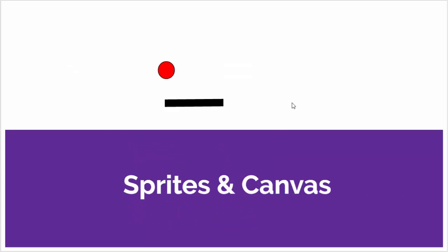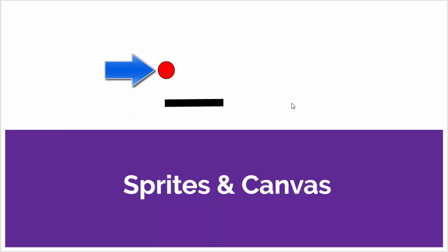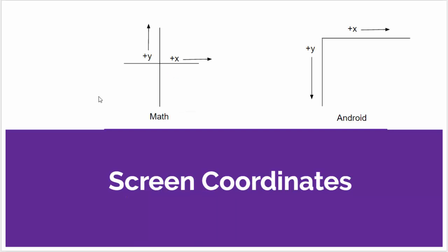Sprites are little animated figures that can be moved around independently. For our simple Pong game we're going to have two sprites: a paddle and a ball. Even though the ball shown here is a circle, the one we're going to use in our game is going to be a square for reasons we will soon explain. The canvas that we're going to use can be thought of as a separate piece of paper that's overlaid on the phone screen.